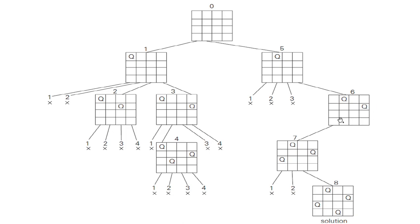Next, I will try to place the third queen in the third row. First column — no conflict, so I have placed the third queen in the first column of the third row. Next, the fourth queen — I will try to place it in the fourth row. First column — conflict. Second column — conflict. Third column — I can place it. So this is the solution of the four-queens problem.